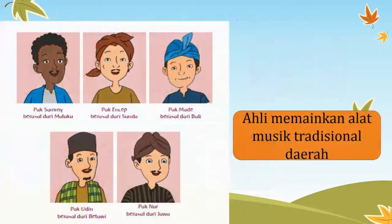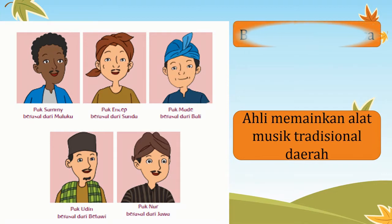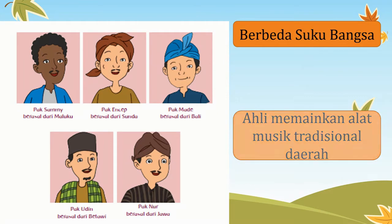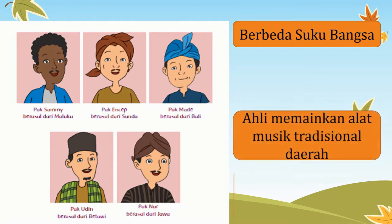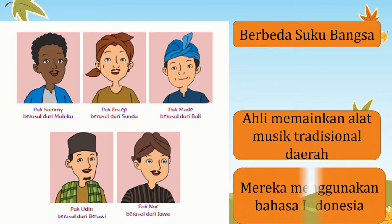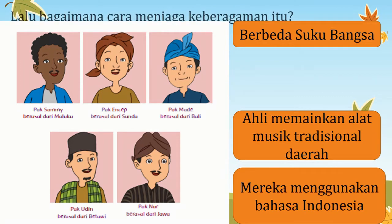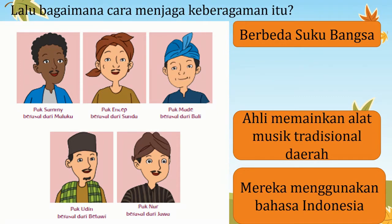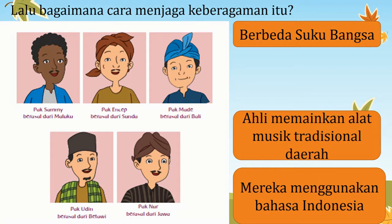Lalu, apa saja ya keragaman yang lain? Pak Sami berasal dari Maluku, Pak Ancep berasal dari Sunda, Pak Made berasal dari Bali, Pak Udin berasal dari Betawi, Pak Nur berasal dari Jawa. Mereka berbeda suku bangsa, namun ahli memainkan alat musik tradisional. Mereka juga menggunakan bahasa Indonesia untuk percakapan sehari-hari, dan menyukai makanan khas dari daerah masing-masing.